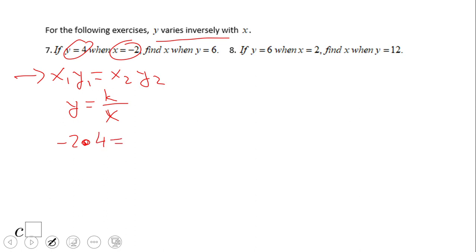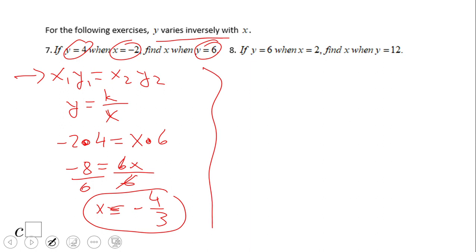Equal, x2, this is the guy we need to find so we can call it x now, and y2, that is 6. So we have here negative 8 equals 6x. Divide by 6, we end up with x equals negative 4 thirds. Okay, pause this video, try number 8.